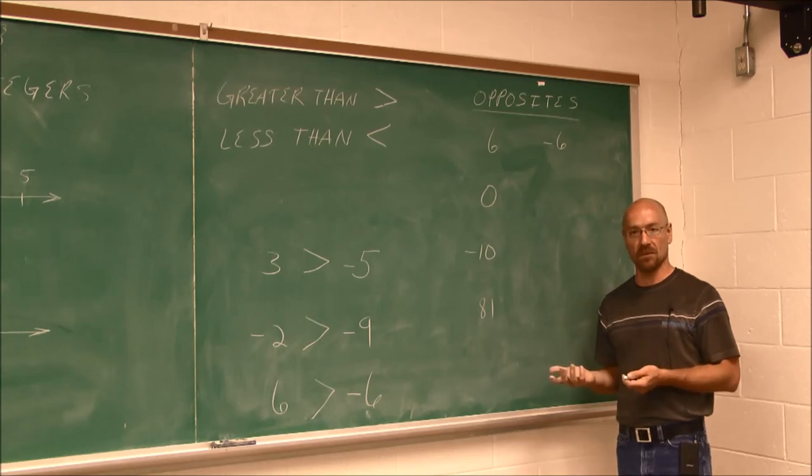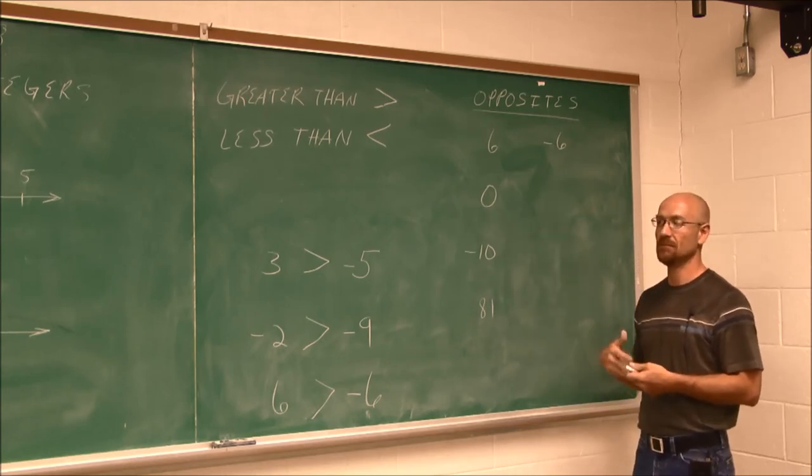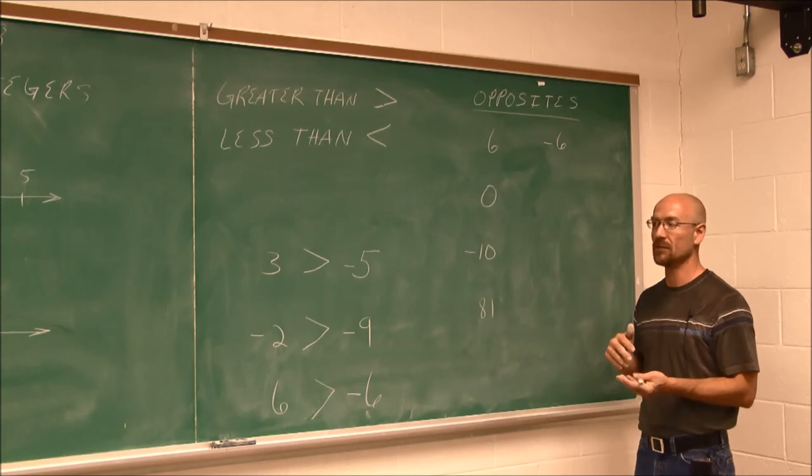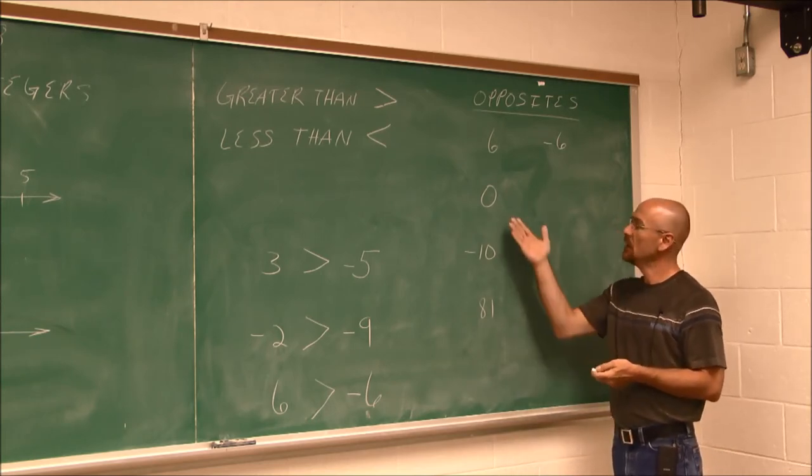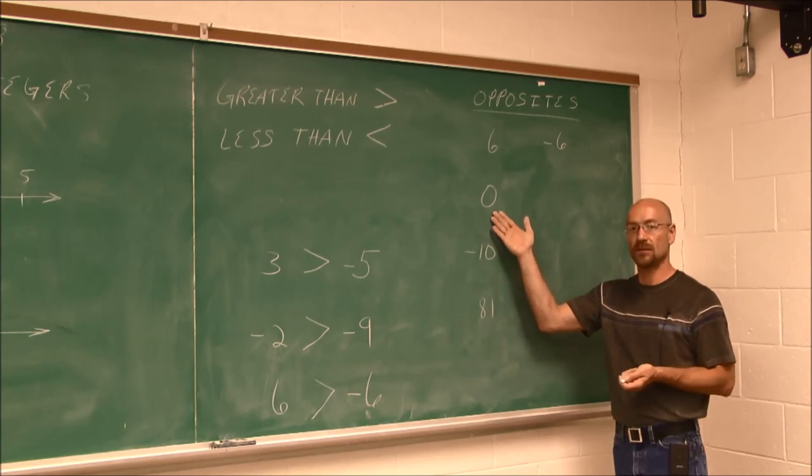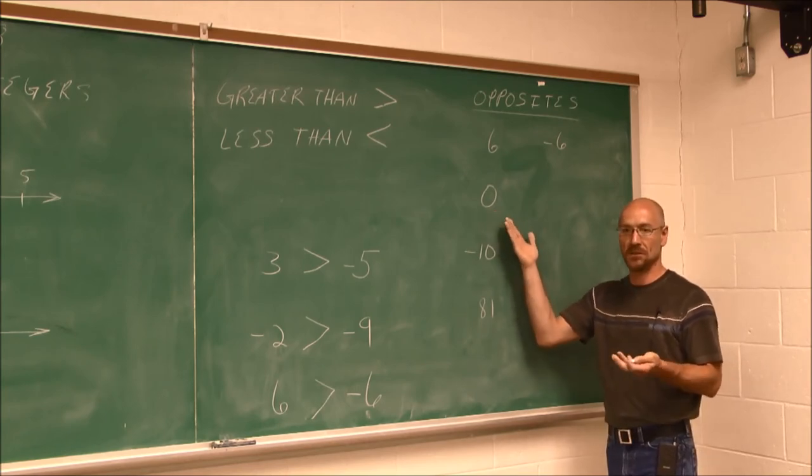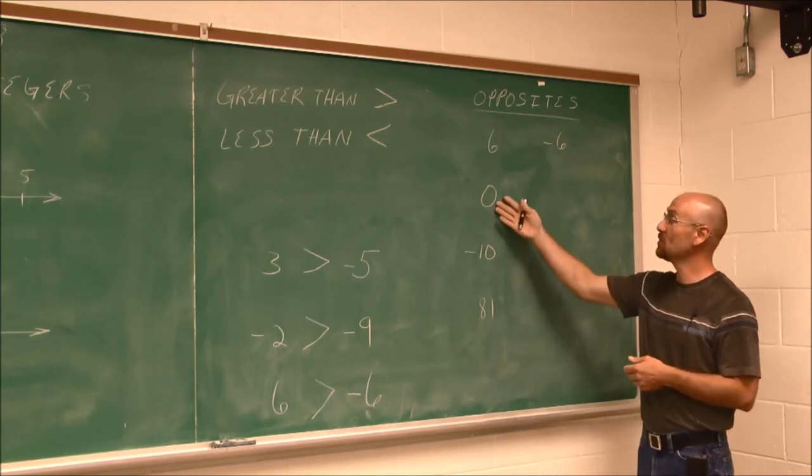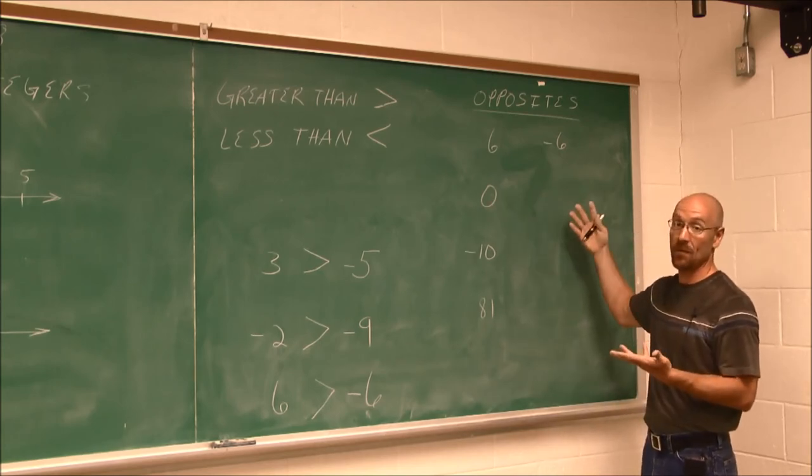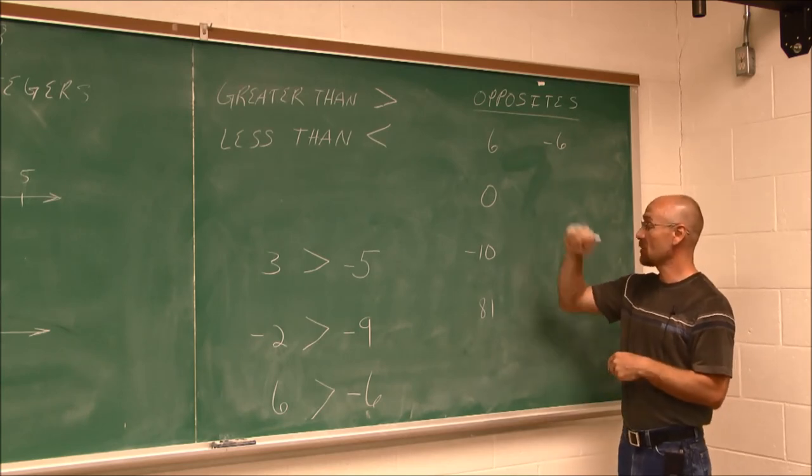It doesn't have an opposite, because this is a case where we think of it as neither positive or negative. When we say opposites, we're saying equal distance from 0. How far is 0 from 0? Zero. It's 0 spaces or tick marks away on the number line. So it is what it is. It does not have an opposite, because that's our reference point.